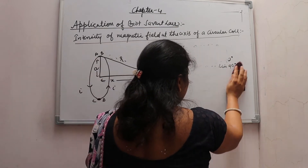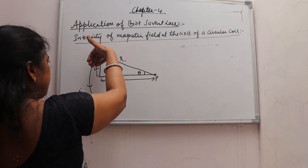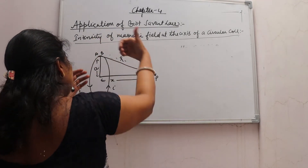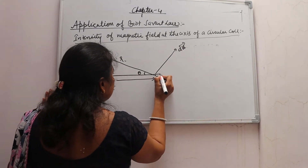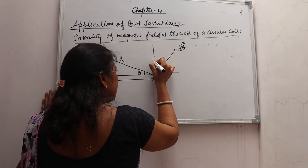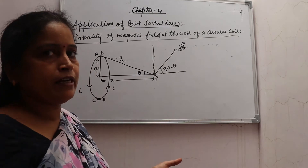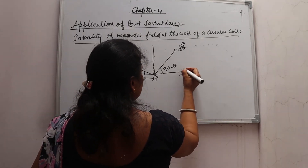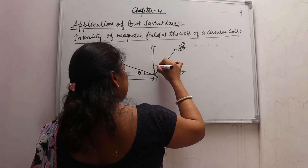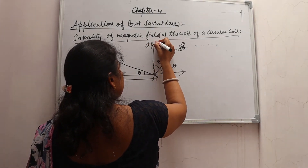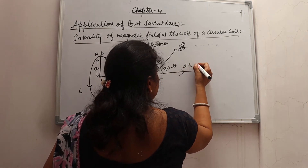Now what will be the direction of the magnetic field at point P? See — this is the direction of current. Using the right-hand rule, the magnetic field direction is outward. If we draw a perpendicular, the angle between DB and the axis will be 90 minus theta. Resolving DB into two components: one component is DB·cosθ along the axis, and the other is DB·sinθ perpendicular to the axis.